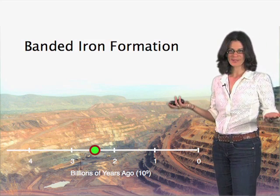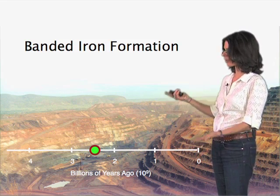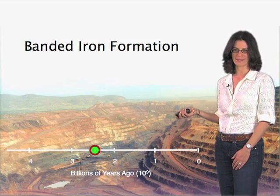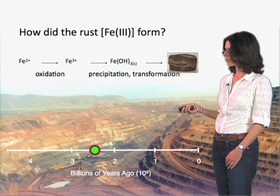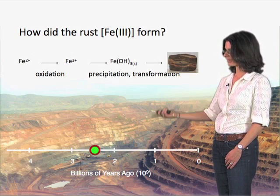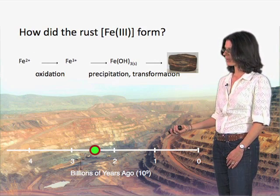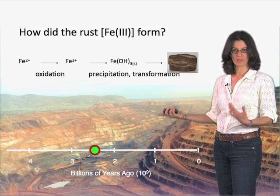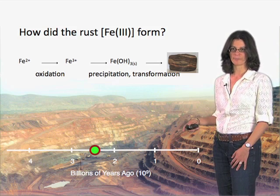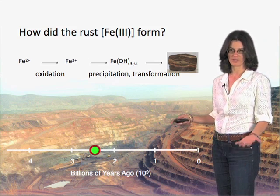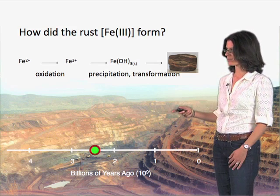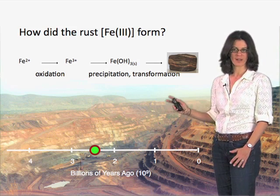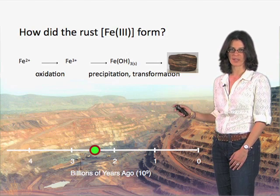How do these massive rock quarries tell us anything about microbial life? Well, when you think about what they actually constitute, they are made up of iron minerals as well as other minerals — cherts, which is a type of silicon oxide, intermixed with these iron species. But for now, let's just focus on the iron.